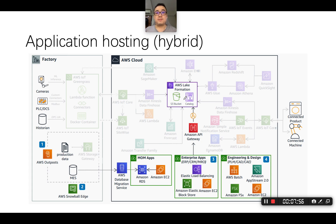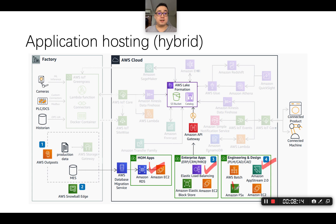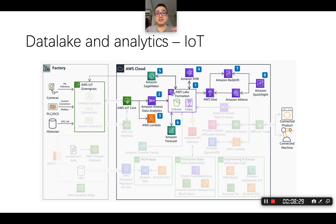In terms of application hosting, you have a variety of choices: EC2 instances, ECS, EKS for microservices, serverless, desktop services, and managed file server services. They all send data proxied by the API Gateway and Lambda functions to the data lake, and also perform analytics on the IoT data.